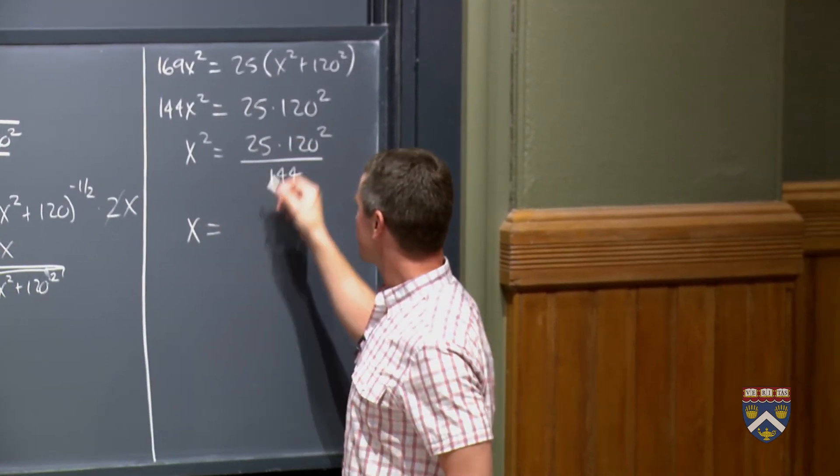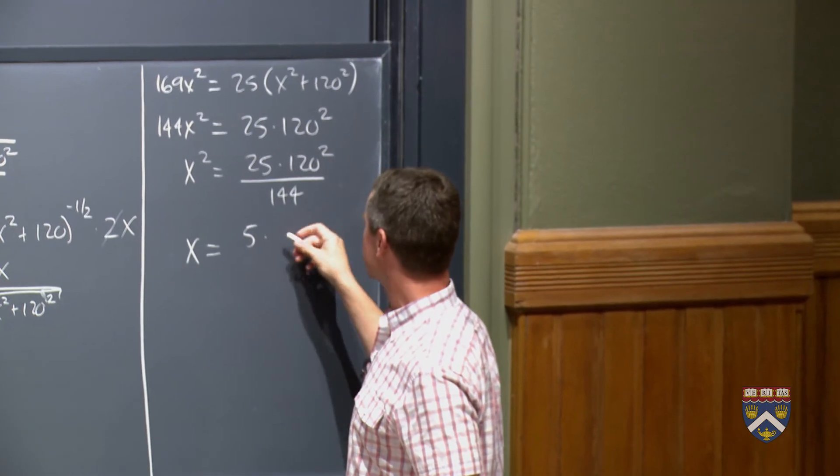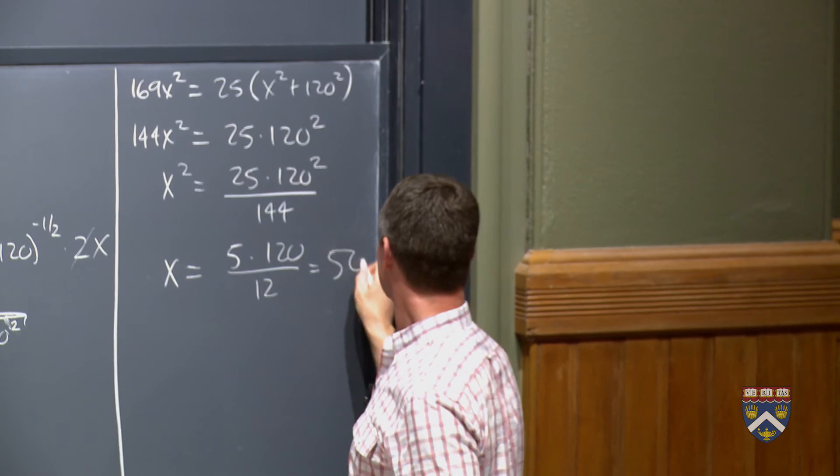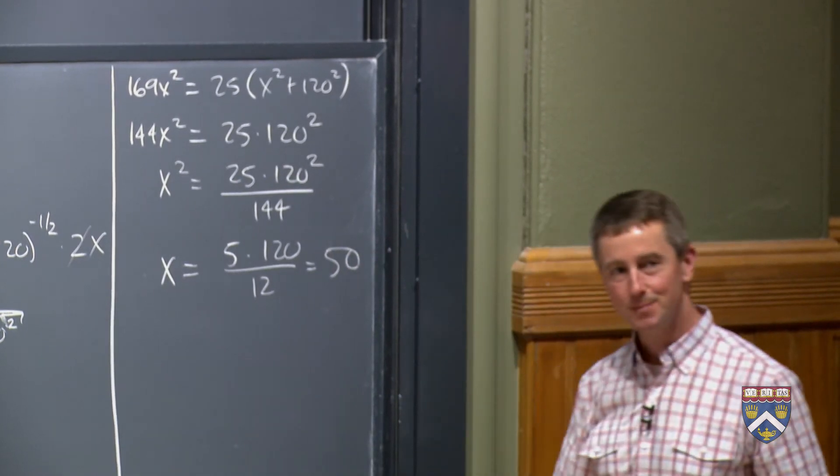So we take the square root, square root of 25 is 5, square root of 120 squared is 120, square root of 144 is 12. And that's 50.